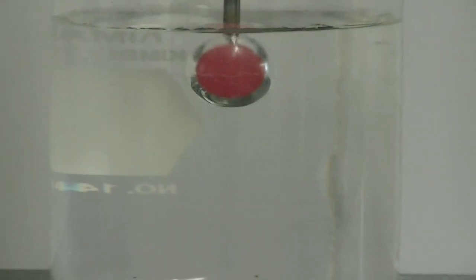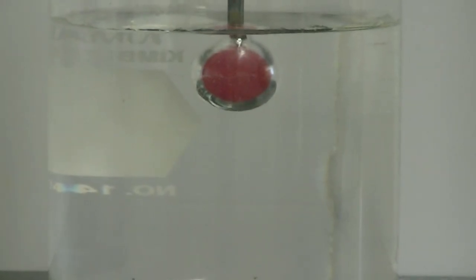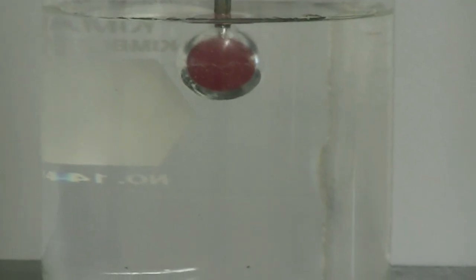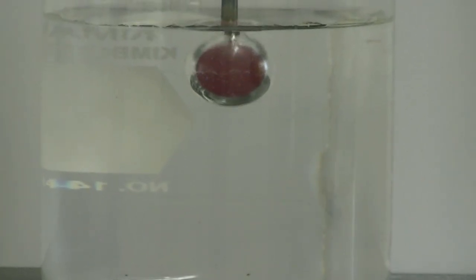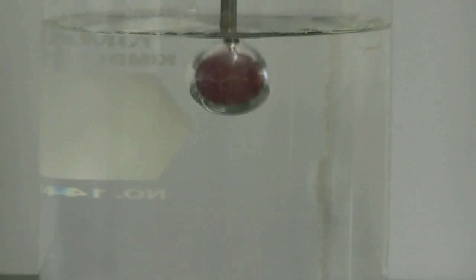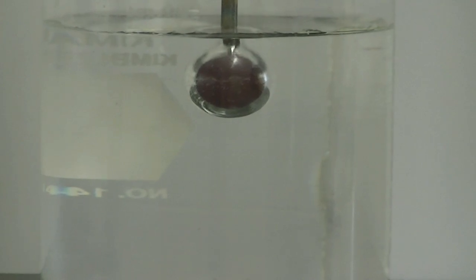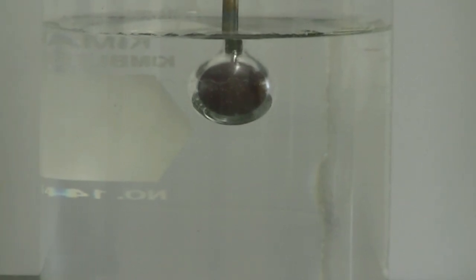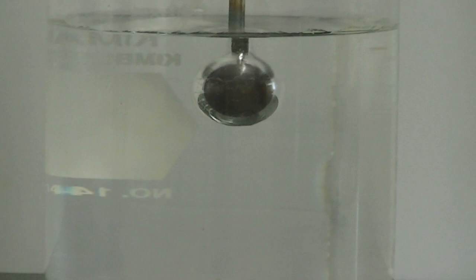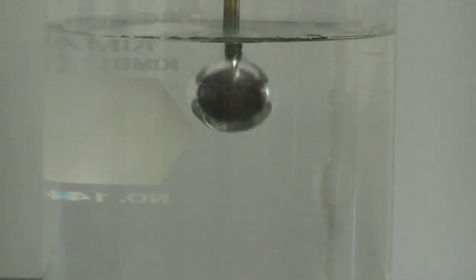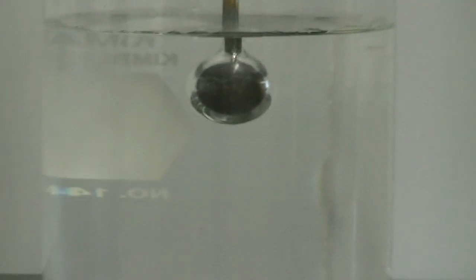The Leidenfrost effect comes into play when a liquid contacts a surface much hotter than its boiling point, just like what's going on here with this hot sphere and the water. When this happens, the water hits the hot surface and boils really fast, so fast that it forms a layer of gas around the hot sphere.